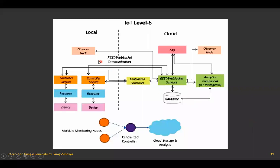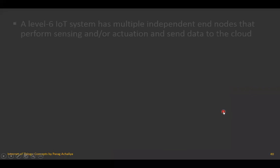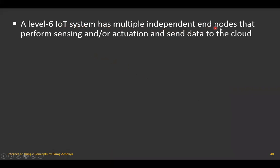The last one is IoT level six. IoT levels five and six are similar, but in level six there is one additional centralized controller — one centralized controller between the various controllers and web services, and one centralized controller between the nodes and cloud. A level six IoT system has multiple independent end nodes that perform sensing and/or actuation and send data to the cloud.